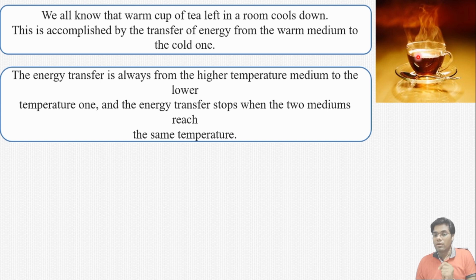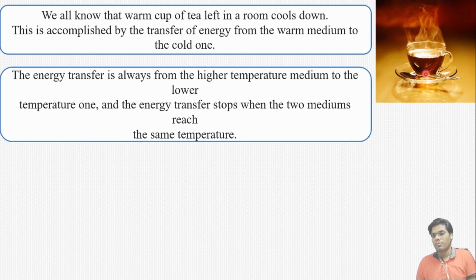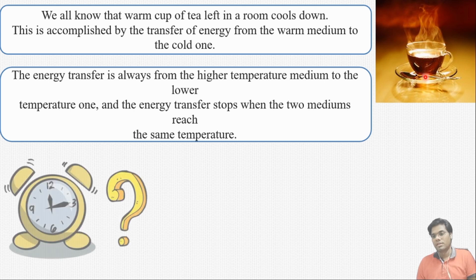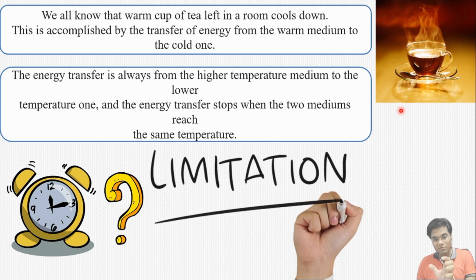We can find out the amount of heat transfer from this system to the surrounding, and we can say that after some time the temperature of this tea will be the same as the ambient surrounding temperature. But if we want to find out the heat transfer rate — how much time it will take to reach the equilibrium condition — we cannot find out the answer to this question using only the concept of thermodynamics. This is the limitation of thermodynamics.